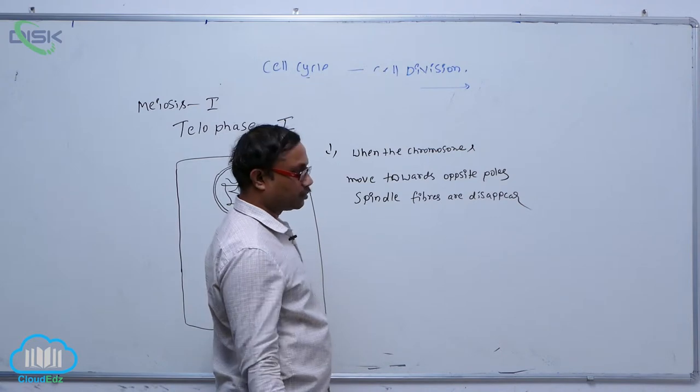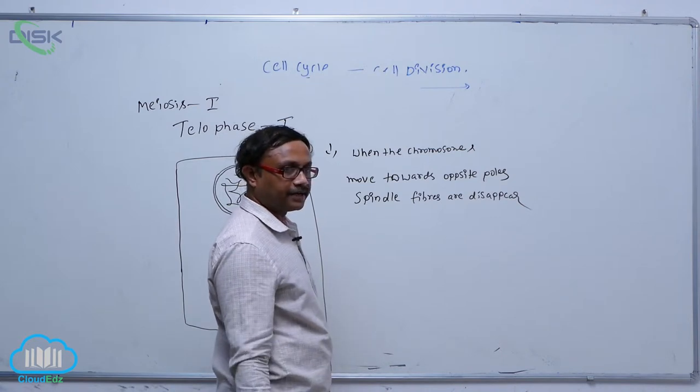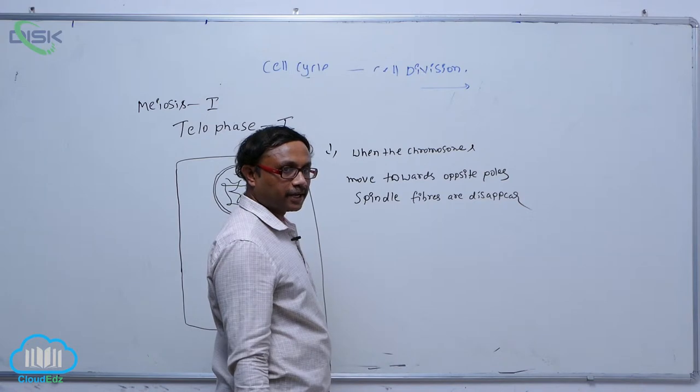After that, the chromosomes lose their identity and form discrete elements.